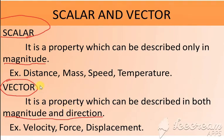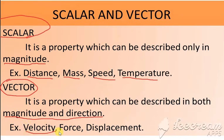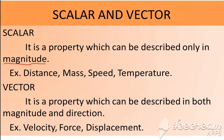Examples for scalar are distance, mass, speed, and temperature. For vectors, it is velocity, force, and displacement. This is about scalar and vector. Scalar and vector can be asked even in a three-mark question: what is the difference between scalar and vector? So you have to write this.